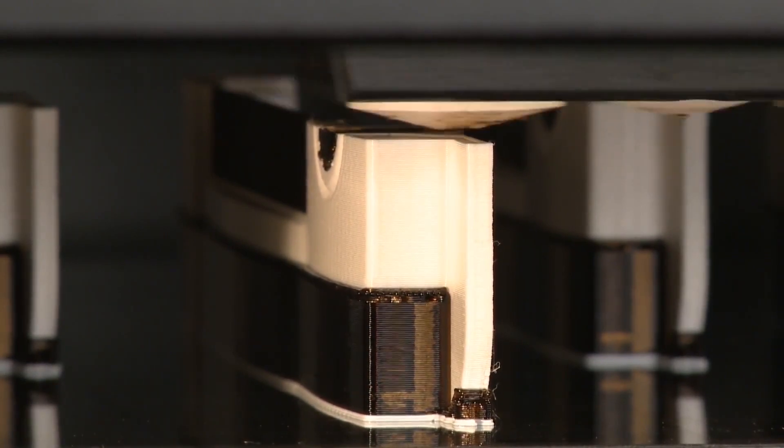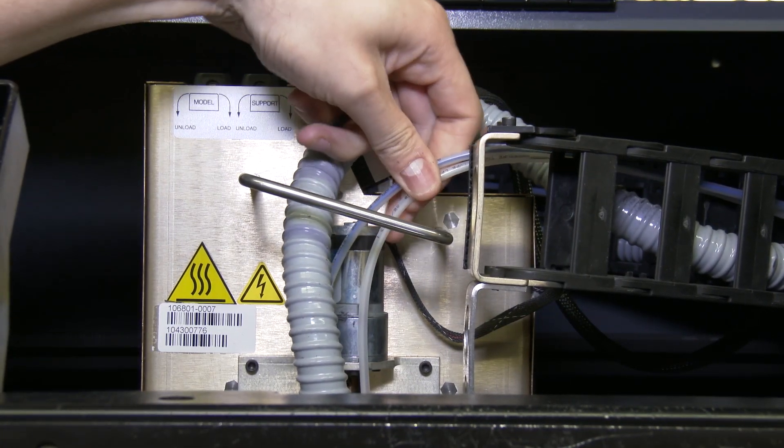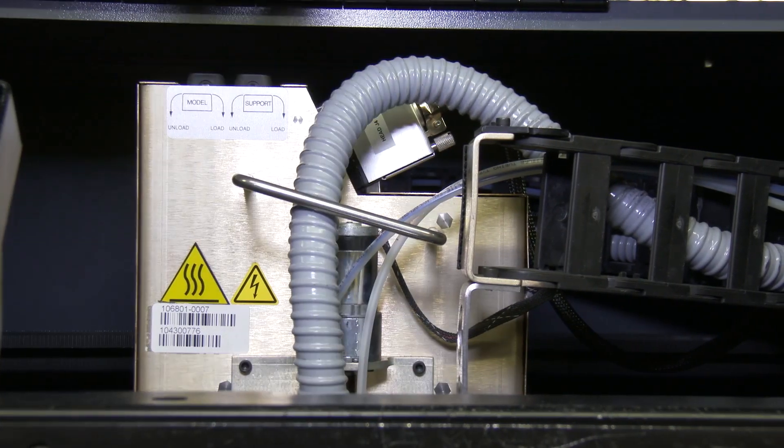FDM is a thermoplastic. You have your model filament and then there's your support filament coming through these tubes being fed from the back of the machine through the bottom of the machine.